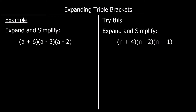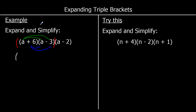So we're going to start by ignoring one of the brackets — I'm going to ignore the last one. So I'm going to expand and simplify (a + 6)(a - 3). To expand two brackets, we multiply both terms in the first bracket by both terms in the second bracket. So we're going to do a times a, a times negative 3, then 6 times a, and 6 times negative 3.